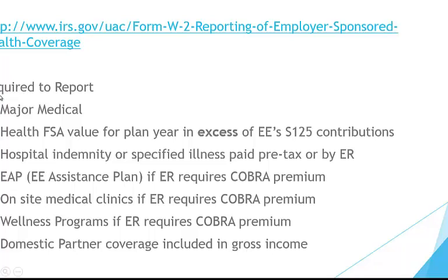Here is what you are required to report for code DD: major medical or FSA in excess of employee contributions; anything pre-tax or paid by the employer; EAP if the employer requires COBRA premium; on-site medical clinics if they require COBRA premium; wellness programs if they require COBRA premium; and domestic partner coverage which is included in gross income.